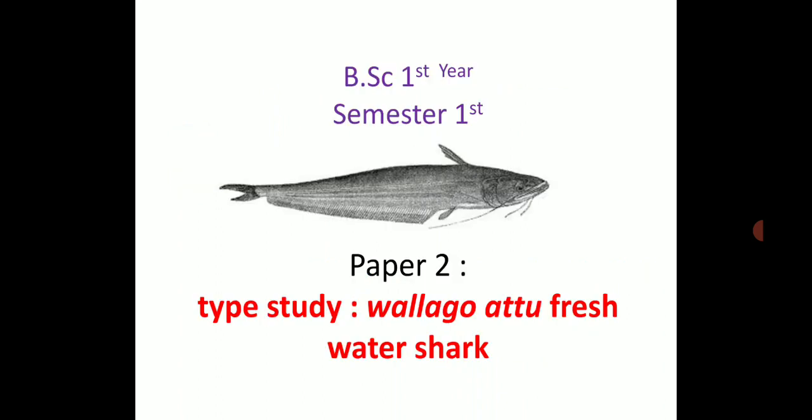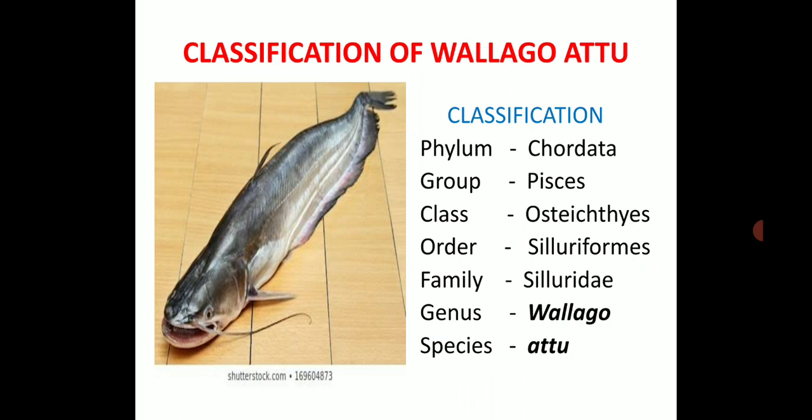This is for B.Sc. First Year, Semester First, Theory Paper Second. The name of the paper is 'Type Study of Wallago Attu,' commonly called the freshwater shark. In this paper we will do a whole detailed study about the specific fish, Wallago Attu. Today we start the first chapter, Unit First, which is the classification of Wallago Attu. Here is the diagram of that fish, Wallago Attu.